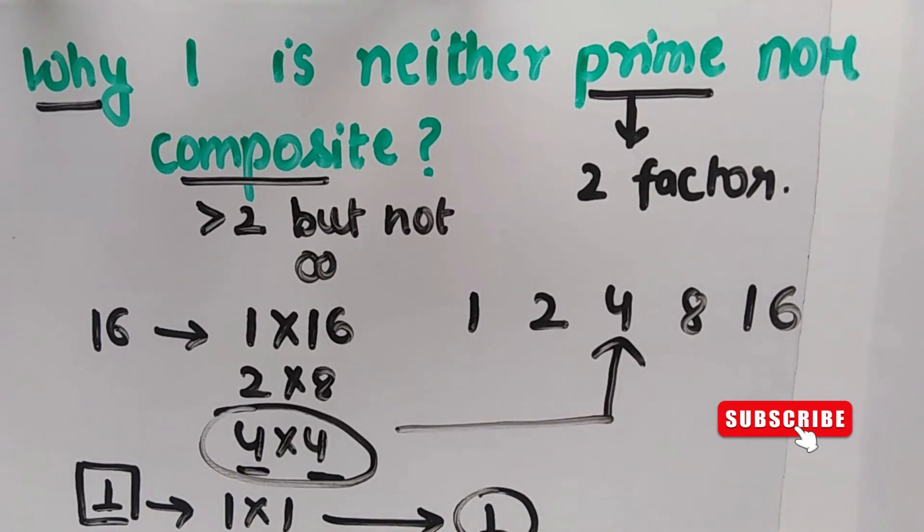That's why 1 is not a prime number. What about a composite number? Since it has less than two factors, it will also not be a composite number.